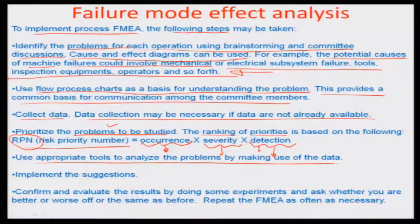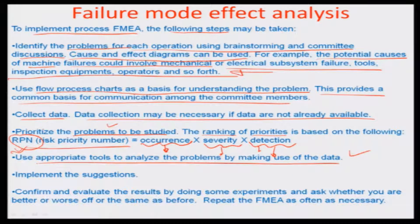You use appropriate tools to analyze the problems by making use of data characterized in various formats to map this RPN or risk priority number. Then you implement some of the suggestions given by process engineers to reduce them, and that way you can actually see how the RPN is varying after the improvement. When you have identified failure modes with an RPN associated with each, you can always apply a countermeasure or counter action so that those modes get eliminated, then rate the RPN again after countermeasures have been implemented and see if the RPN is coming down.